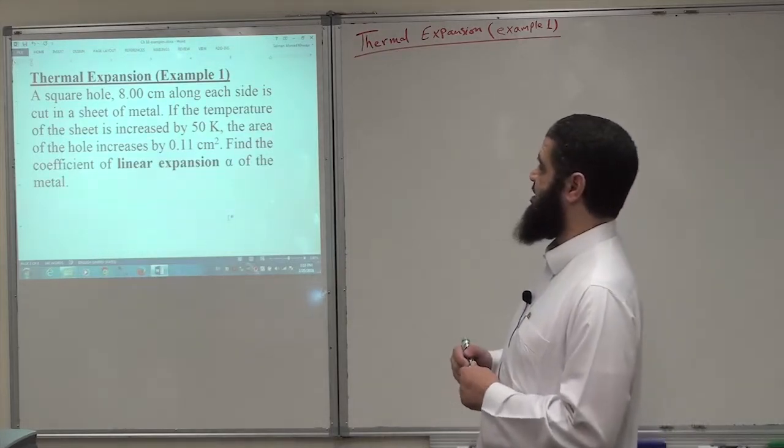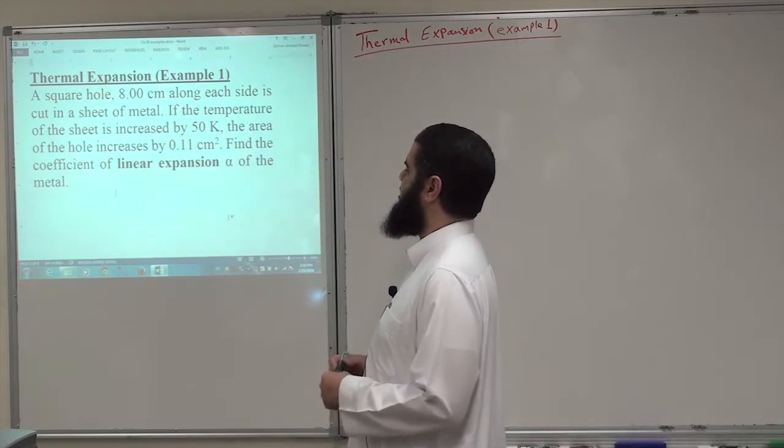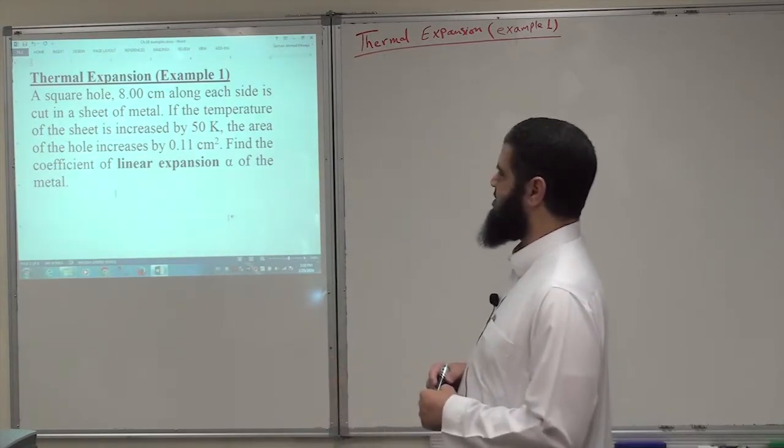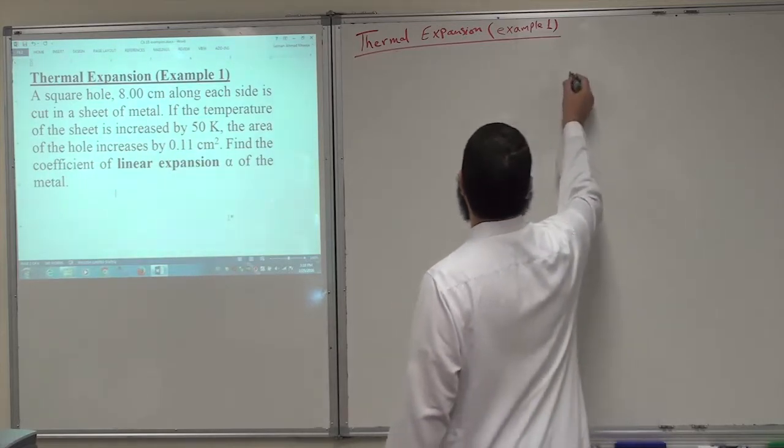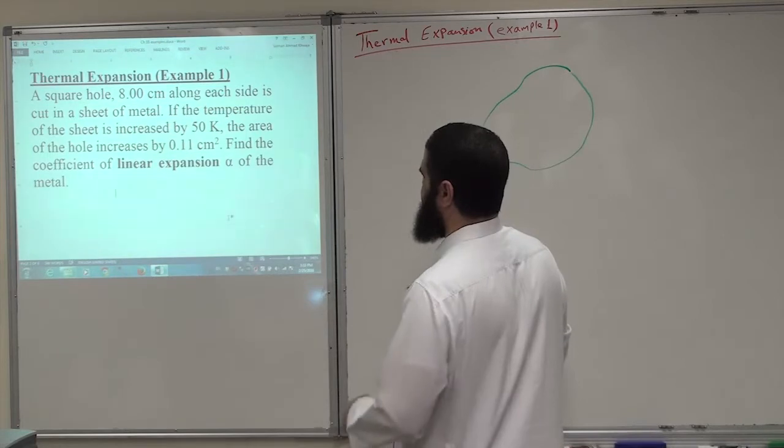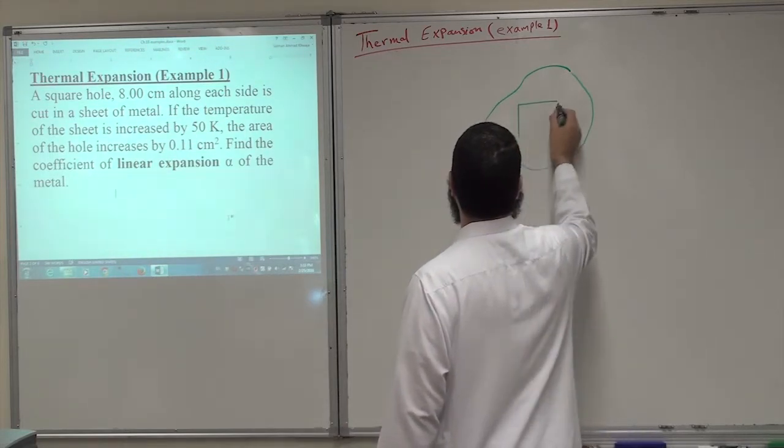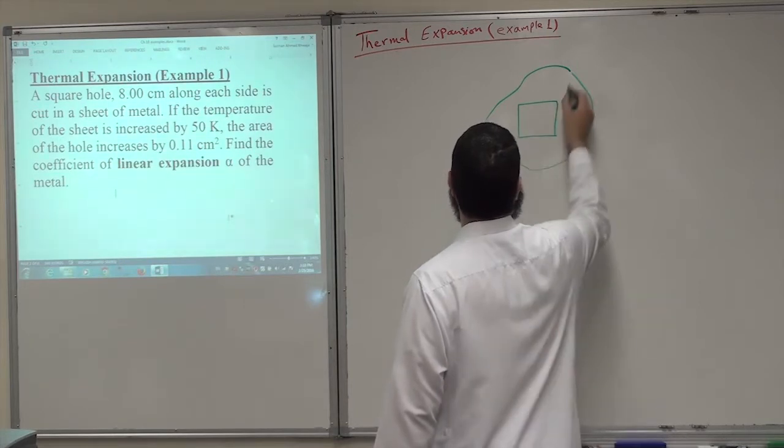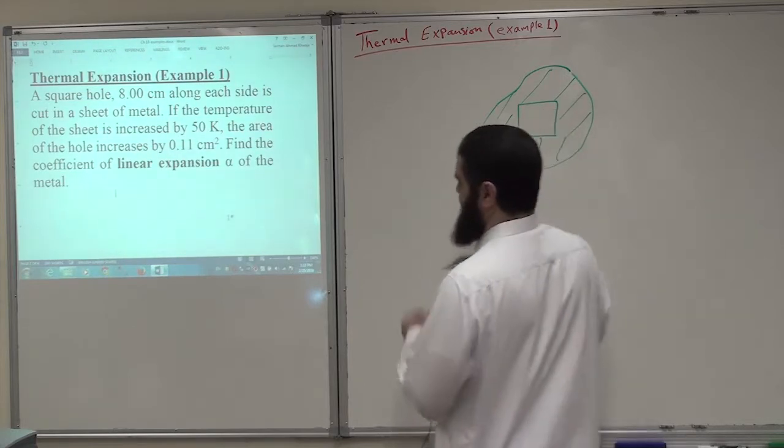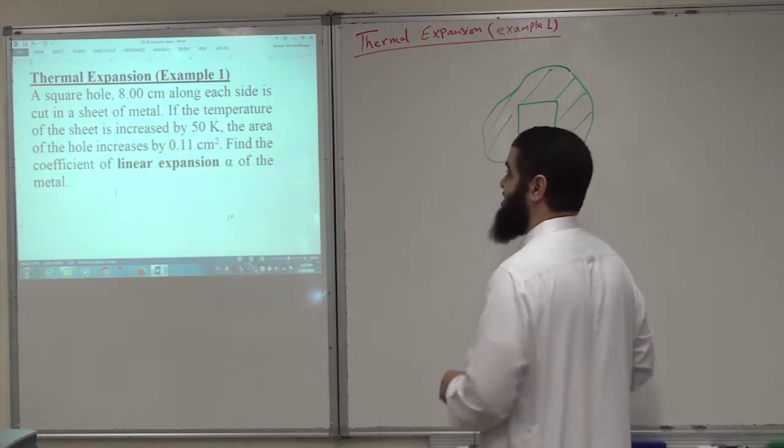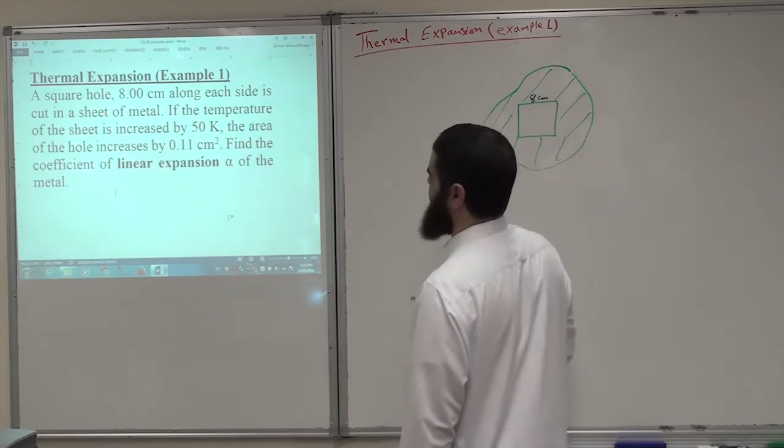This is an example about thermal expansion. It says you have a square hole, 8 centimeter along each side, cut in a sheet of metal. So we have a sheet of metal and in this sheet of metal we have a hole, and that hole is a square. So this is the metal and this is the hole, and the dimensions of this hole - it is a square. So the side is 8 centimeter by side.